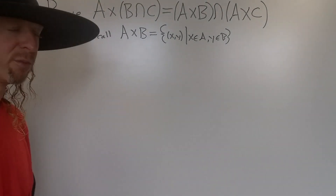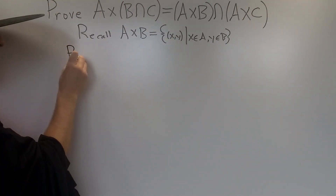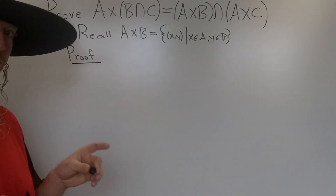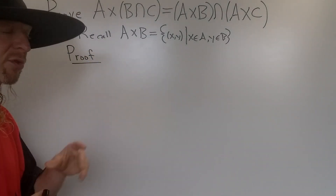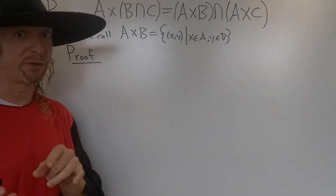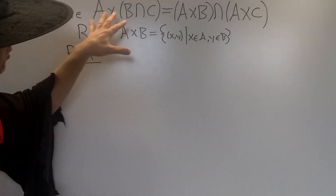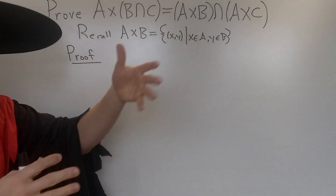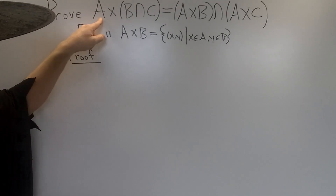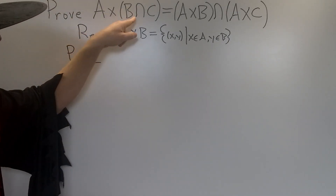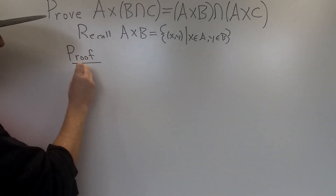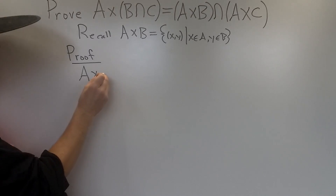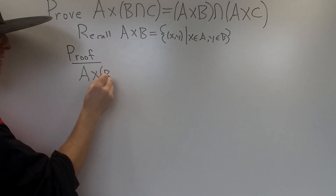Let's go ahead and go through the proof. So what we'll do is start with one side and show it's equal to the other side. We're going to start with the left side, write down what it means, and go from there. So we have A cross B intersection C.